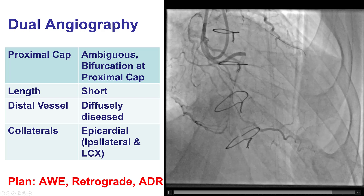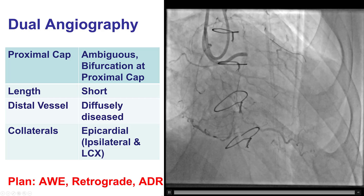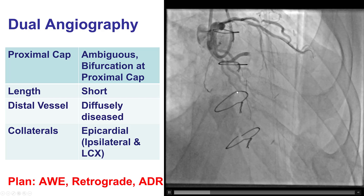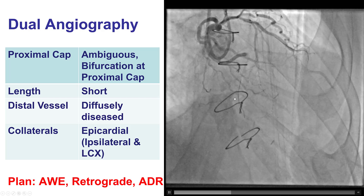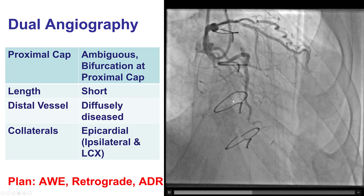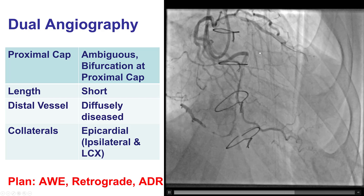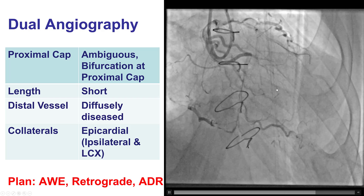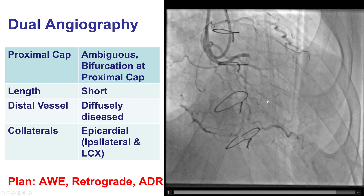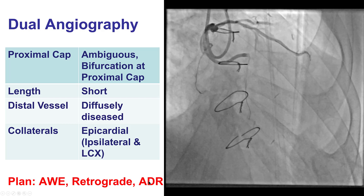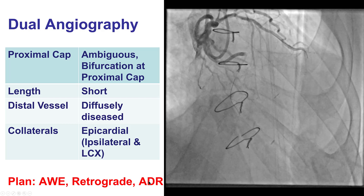Based on these anatomic features, our plan was to try first antegrade wire escalation. If that didn't work, try retrograde through the septals, then try antegrade dissection re-entry.